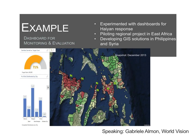We could see how many kits were distributed in each city, and scrolling through the widgets, what kinds of kits were distributed for each city. This project went so well that we're actually piloting a regional monitoring dashboard for East Africa, developing a GIS system for our recovery work in the Philippines, and also a dashboard for our Syria response team — which will have the disconnected environment component.